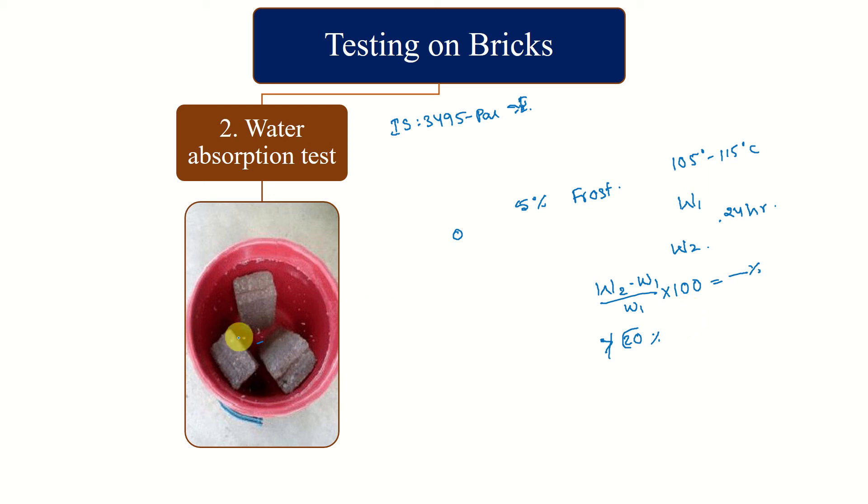We have another method for water absorption test, that is absorption through five hours boiling. In this, the brick is immersed in water and boiled for five hours. Later it is cooled down to room temperature naturally by 16 to 19 hours. This specimen is taken out and wiped with the damp cloth and the weight is recorded as W3.